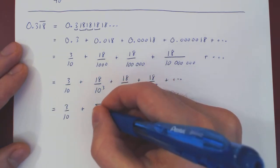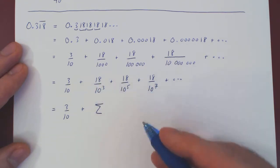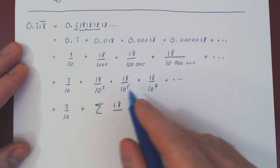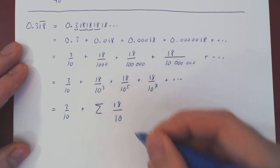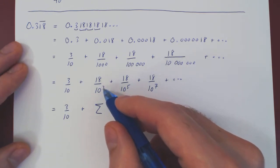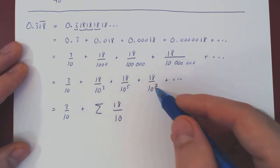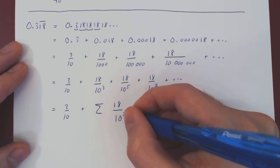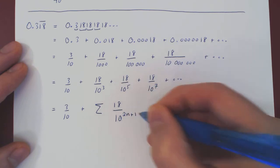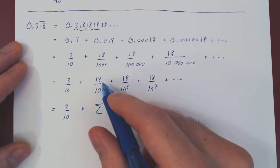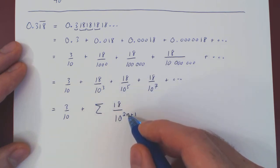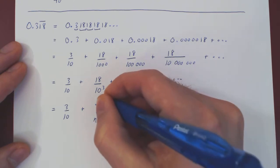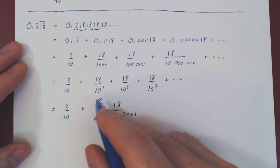We are summing: the numerator is always 18, that never changes, over 10 to some power, where 10 never changes. The exponents are 3, 5, 7, 9, 11, 13, and so forth — all odd numbers. Odd numbers are of the form 2n plus 1, and we need to begin with a power of 3, so n begins at 1 (since 2 times 1 plus 1 is 3). As the sum is infinite, we go all the way up to infinity.